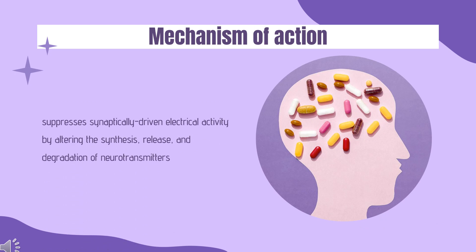Mechanism of Action. The mechanism of action by which zonisamide controls seizures has not been fully established. However, its antiepileptic properties may be due to its effects on sodium and calcium channels. Zonisamide blocks sodium channels and reduces voltage-dependent transient inward currents, stabilizing neuronal membranes and suppressing neuronal hypersynchronization. It affects T-type calcium currents but has no effect on L-type calcium currents.